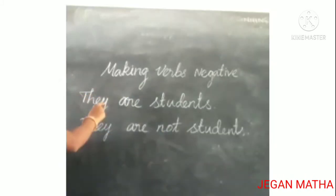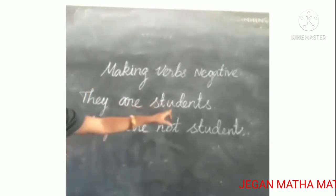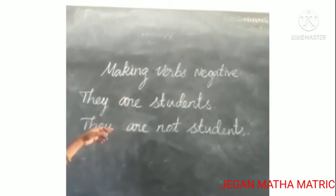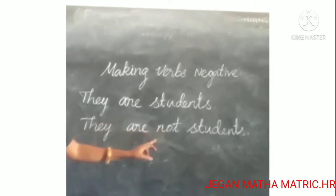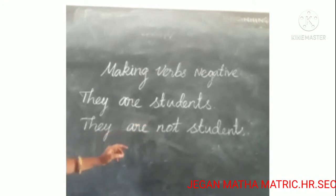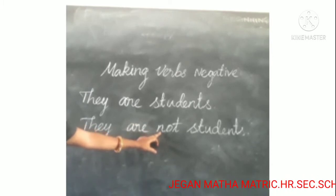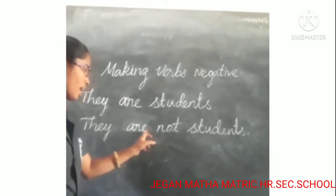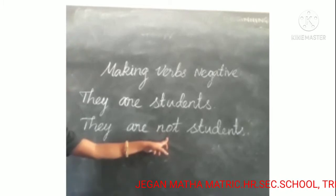Children, look at the first sentence: 'They are students.' How do you change the sentence into negative? We put 'not' after the verb to make it negative. The verb here is 'are', so after 'are' we add 'not' to make the sentence negative.